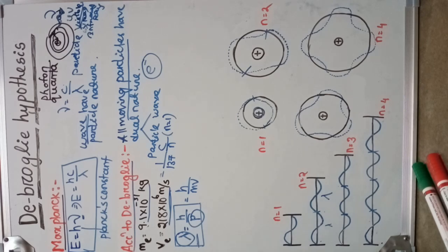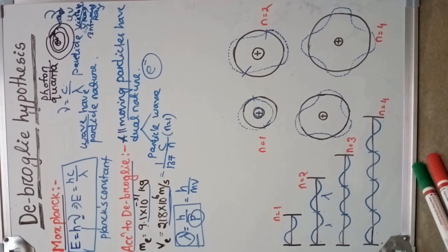This is one of the predictions of de Broglie's hypothesis. Later, this was proved by the Davisson and Germer experiment, which discovered and confirmed that the electron has both particle nature as well as wave nature.